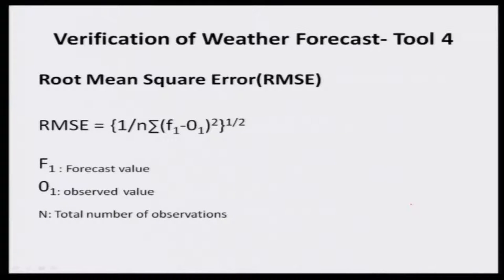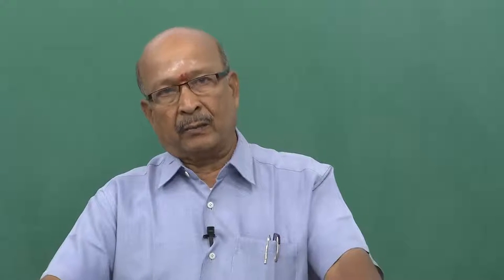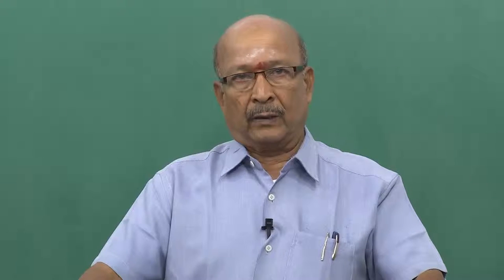The fourth tool is Root Mean Square Error, RMSE. This is a simple tool that anybody can use. RMSE involves the summation of the difference between forecasted and observed values, squared, and then the square root — the equation is provided. It can be done manually, statistically, or with computer software. Importantly, this analysis must be done for at least a full season for a particular cropping system or crop management activities. Otherwise, it is very difficult to use the weather forecast obtained from weather-generating institutions.